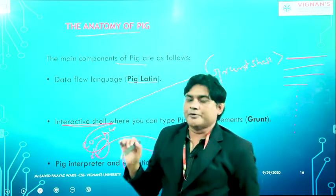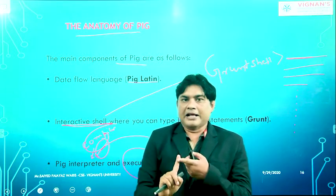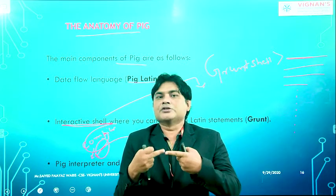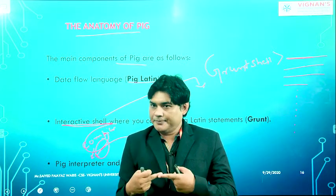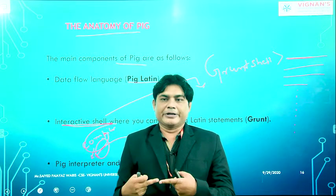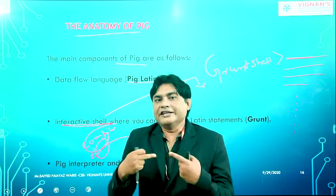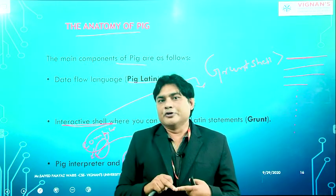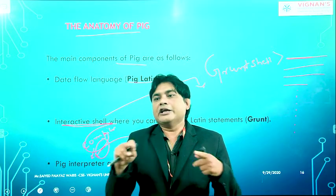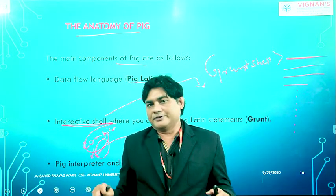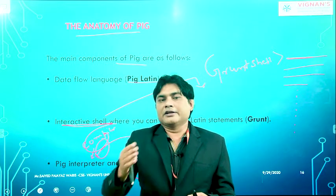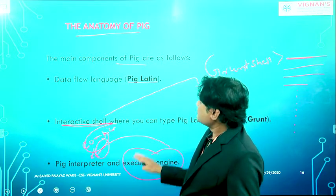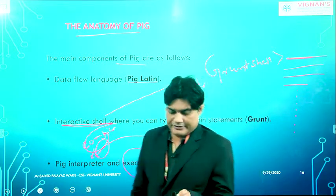The Execution Engine takes care of all MapReduce programs, does the processing, and returns the result back to the developers. So the anatomy of Pig has: Pig Latin as the language, the Grunt shell as the interactive shell for writing scripts, and the Interpreter plus Execution Engine which converts scripts into MapReduce programs and processes them.